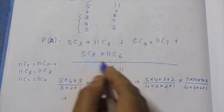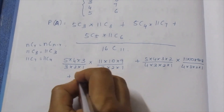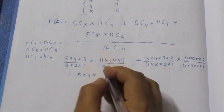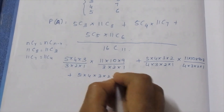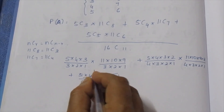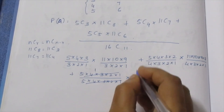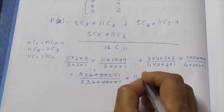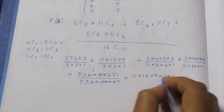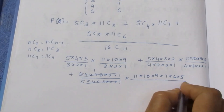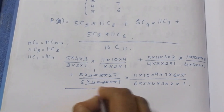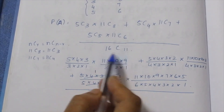Plus 5C5 — which equals 1 — since 5 × 4 × 3 × 2 × 1 divided by 5 factorial is 1. Into 11C6: 11 × 10 × 9 × 8 × 7 × 6 divided by 6 factorial. The denominator is 16C11.